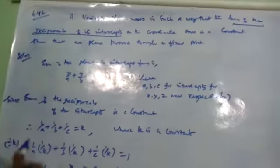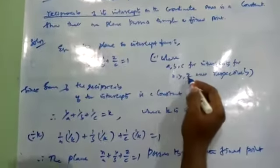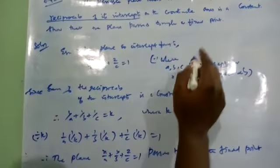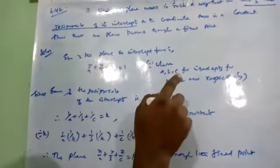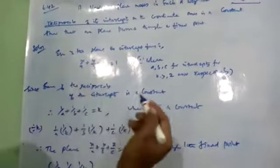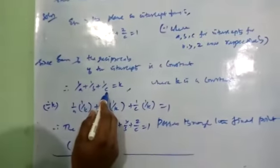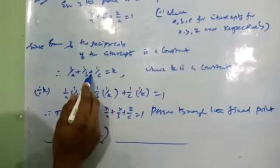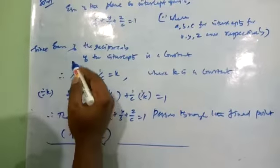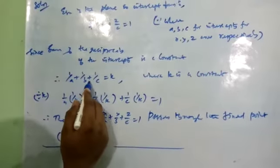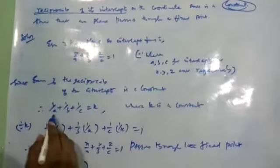The intercept on the plane equation is x by a plus y by b plus z by c equals 1. If the constant is k, then 1 by A plus 1 by B plus 1 by C equals k, where k is a constant.